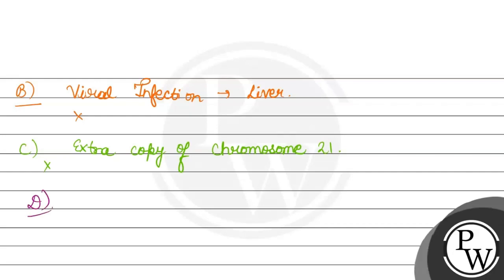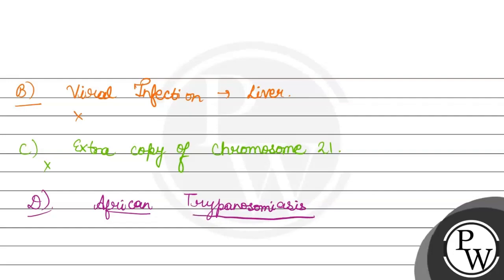Option fourth, Sleeping Sickness. This is called African Trypanosomiasis. It is caused by the tsetse fly. This affects the central nervous system. But this is not called Christmas disease.